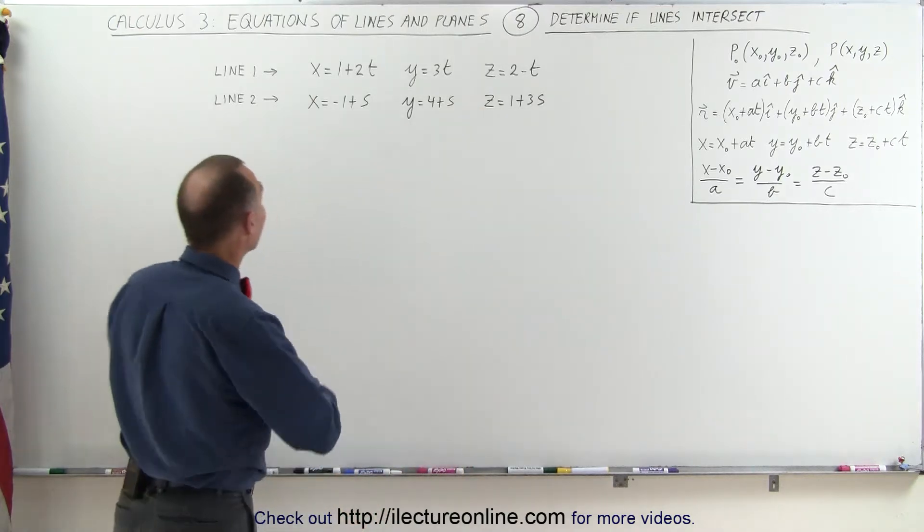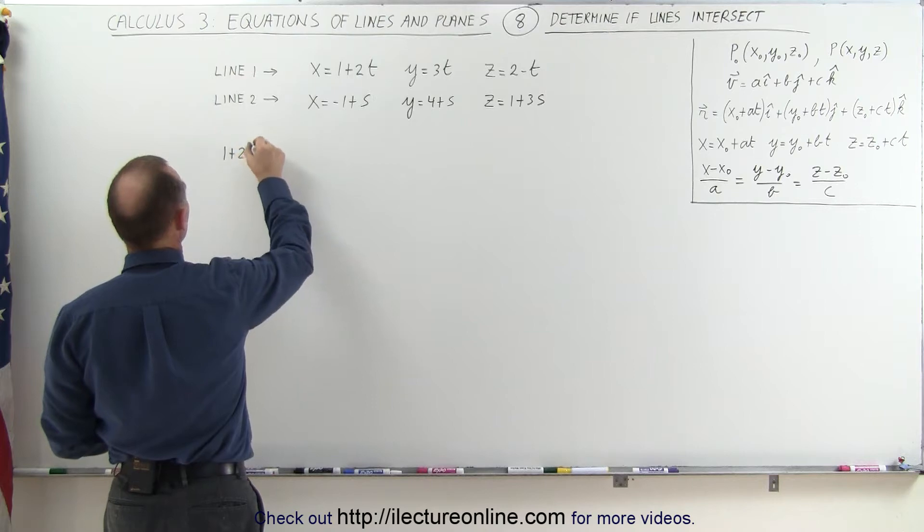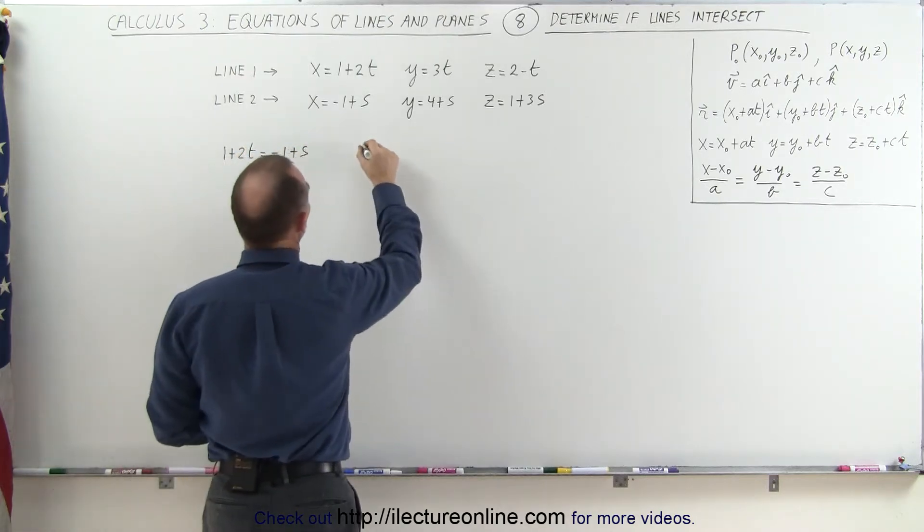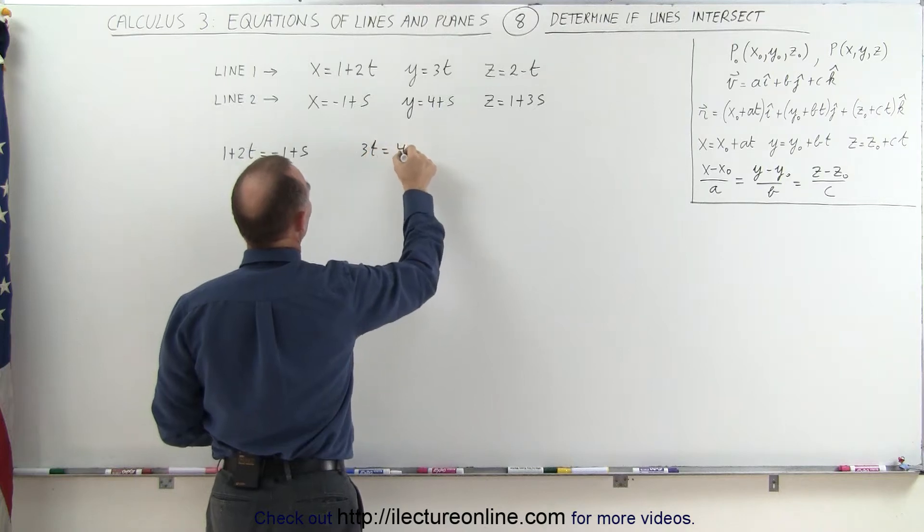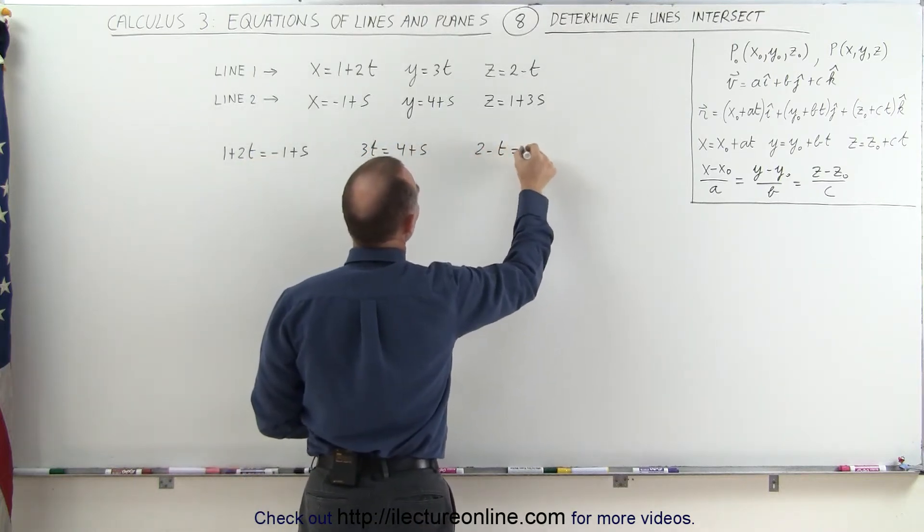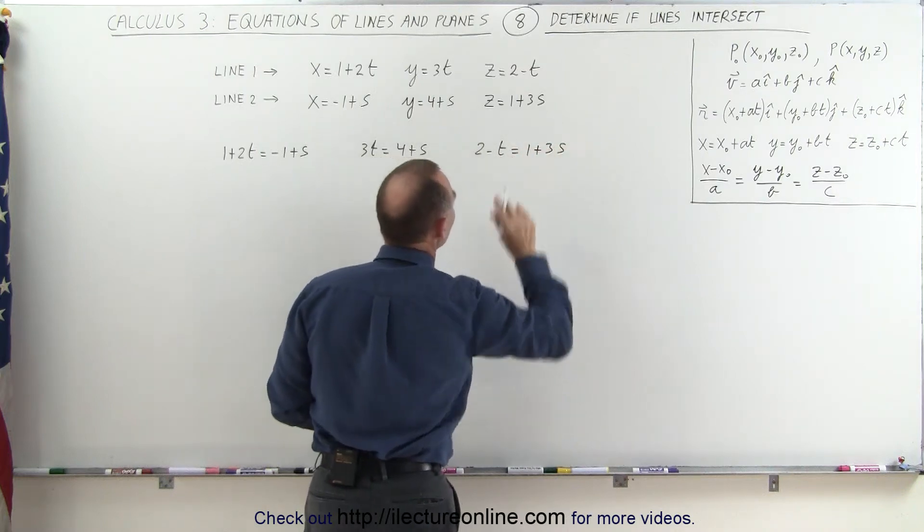Which means that 1 plus 2t must equal minus 1 plus s, and 3t must equal 4 plus s, and 2 minus t must equal 1 plus 3s, all at the same time.